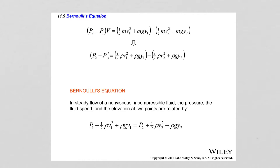Bernoulli's equation states that in a steady flow of a non-viscous incompressible fluid, the pressure, fluid speed, and elevation at two points are related by: P₁ + ½ρV₁² + ρgY₁ = P₂ + ½ρV₂² + ρgY₂. At each point the sum of pressure, kinetic energy per unit volume, and gravitational potential energy per unit volume is constant.